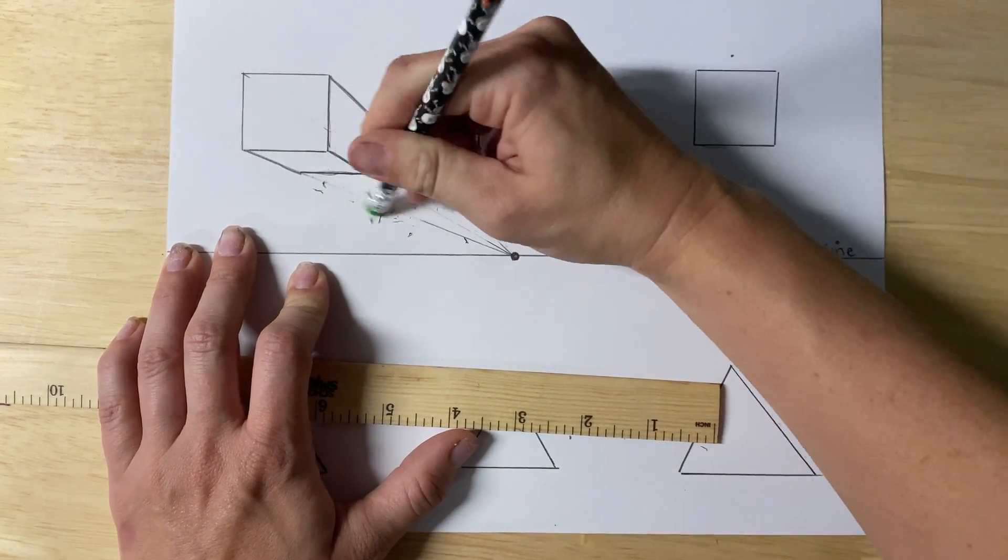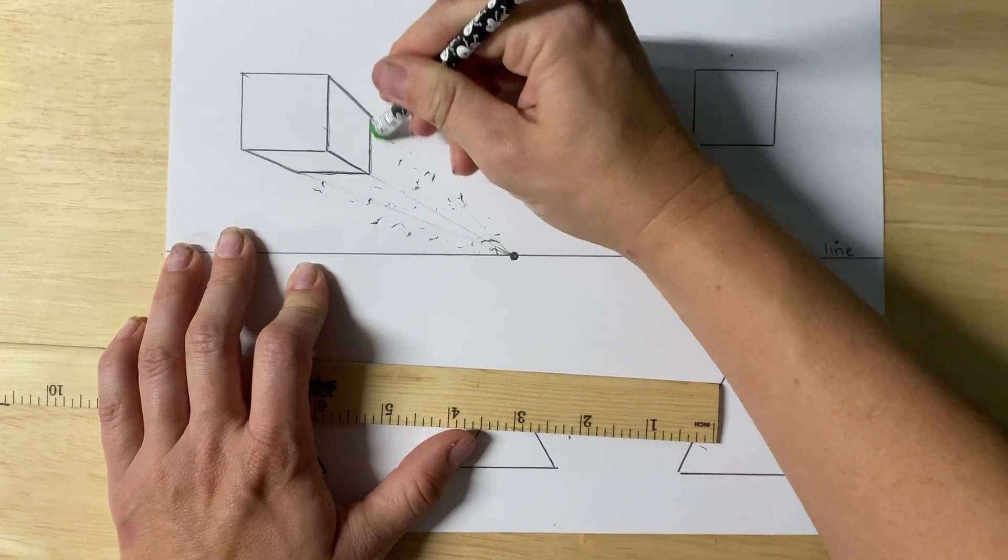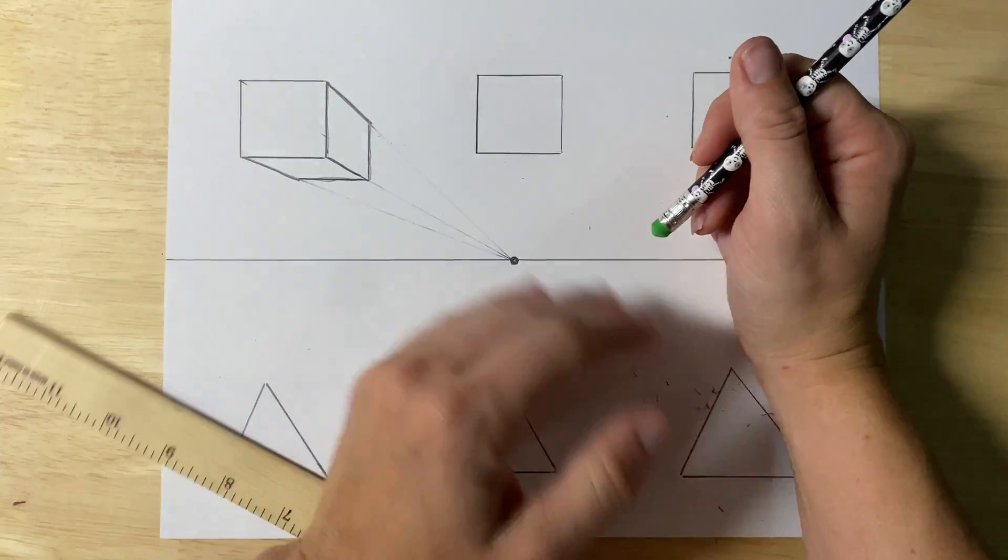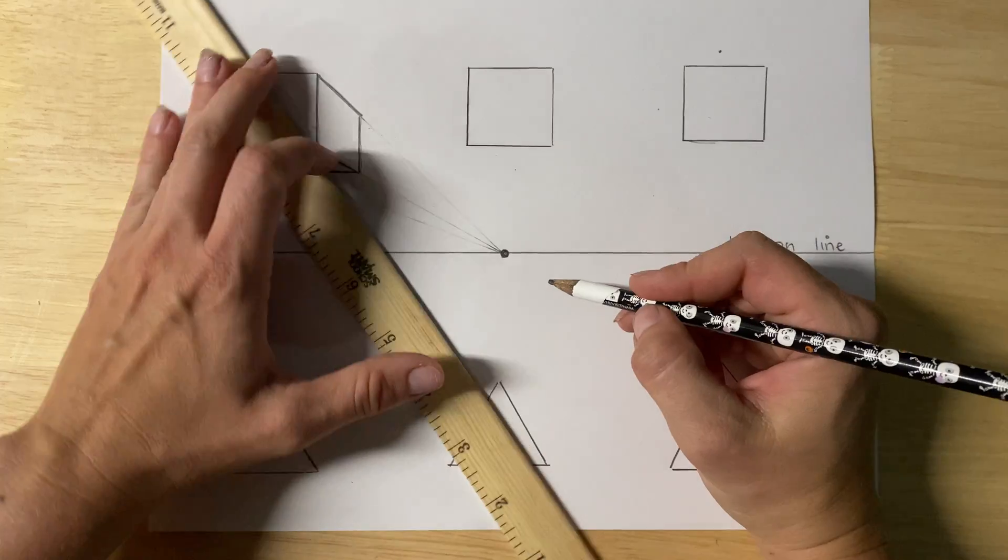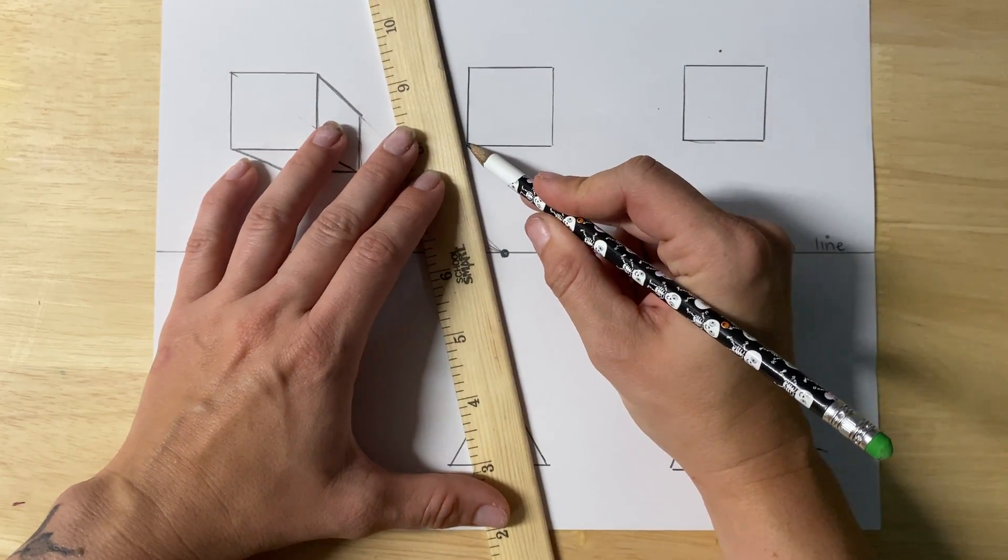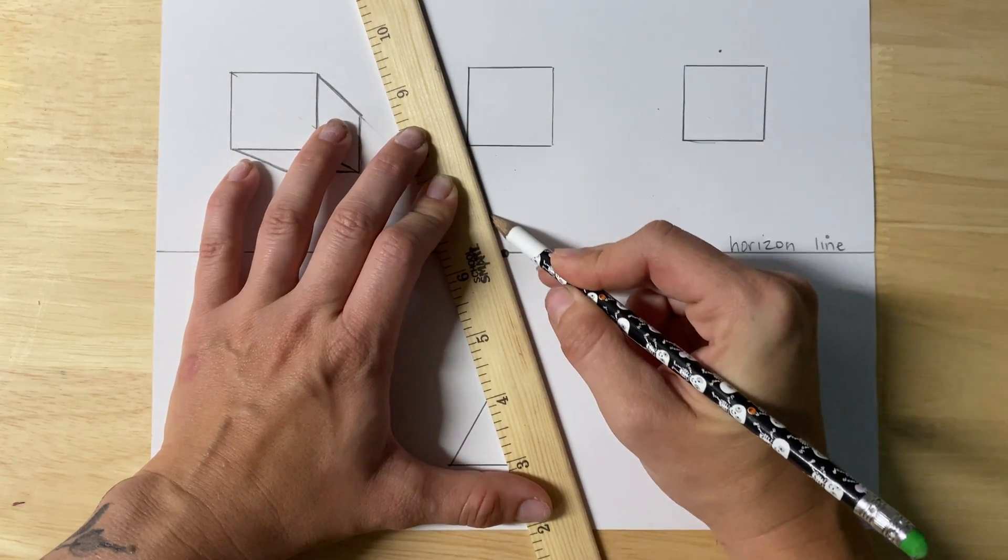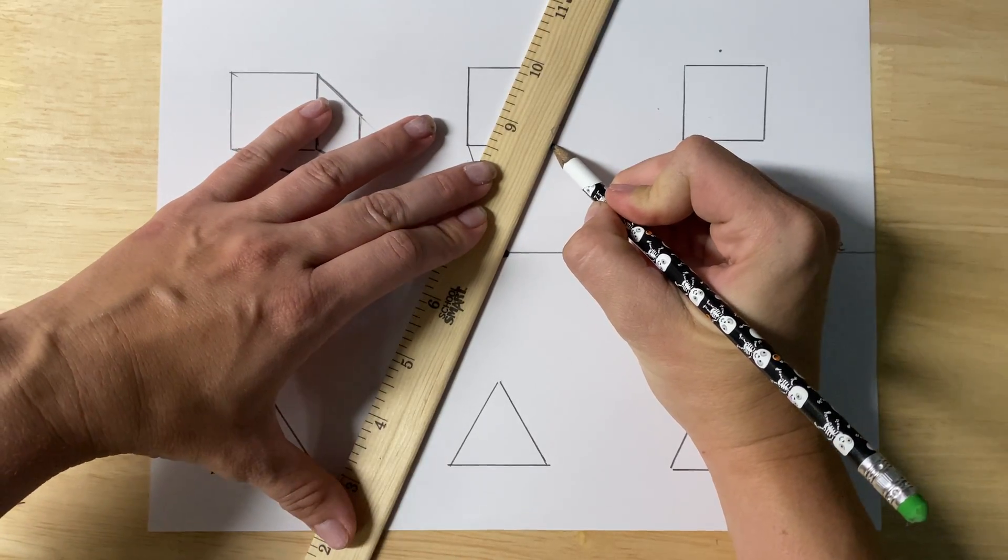Now I can darken up my cube here and get rid of these. These were extra, they helped me draw the shape, but I don't need them. They're just floating into space. This is all I care about right here. Okay. Onto the next one. Start at your corner, bring it down, bring it down.